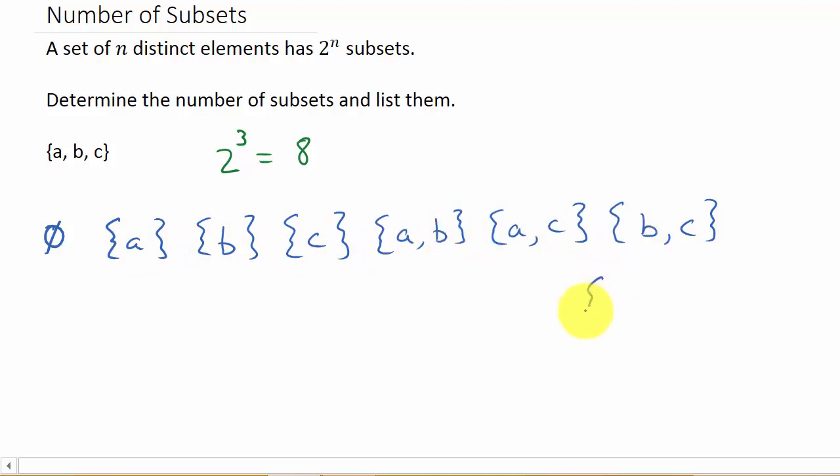Well, what could that be? That would be the set itself: A, B, C. Okay, so I think that's the easiest way to do it. You've got the empty set, the set itself, and then you've got each element as an individual set. And then you've got A, B, A, C, and then go to the B, B, C. And that takes care of all of them.